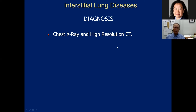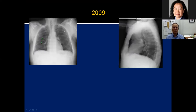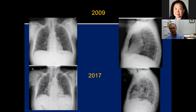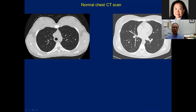Here are examples of imaging tools. This chest X-ray from 2009 shows a basically normal appearance. Eight years later, there are many lines, the lungs are smaller, and those lines are suggestive of ILD. However, we cannot see the detailed distribution and characteristics with X-ray — that's why we now use CT scans.